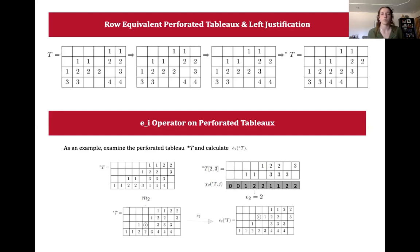The EI operator on perforated tableau that I studied, shown below, essentially identifies where content in row I plus one can be moved up into row I and then proceeds to swap that content with the covering blank above it.